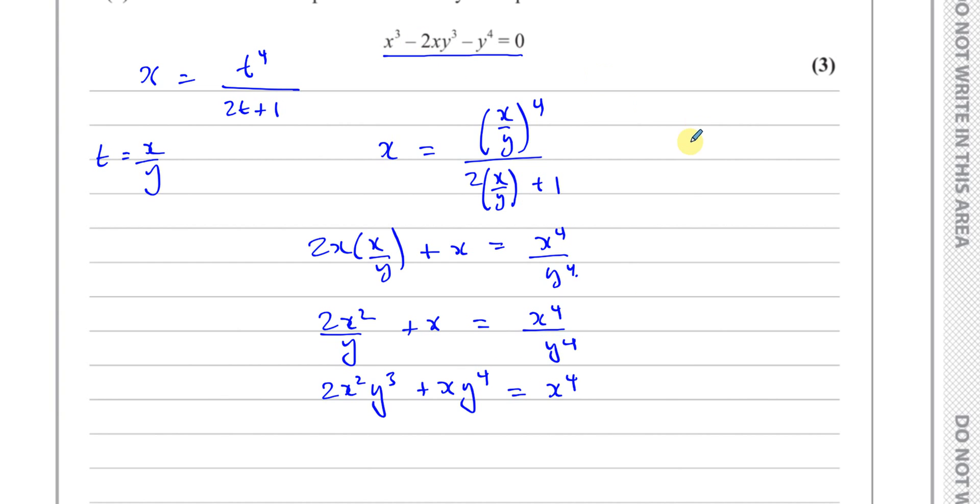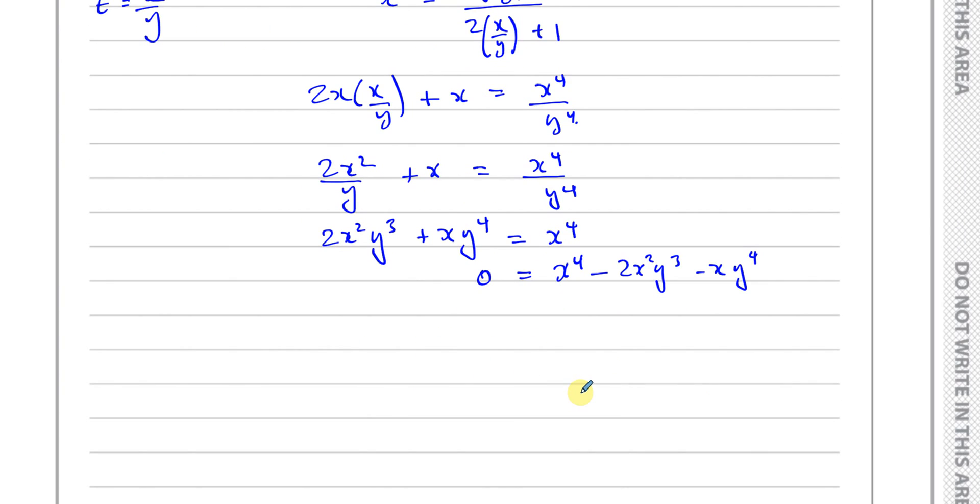We want it to look like this, so let's now bring everything on this side. You're going to have x to the power four minus 2x to the power of two y cubed minus x y to the power four. So I've subtracted these from both sides. Now what I can see is if I divide everything by x, it's going to look exactly what we've got. So I have x to the power three minus 2x y cubed minus y to the power four equals zero, just dividing everything by x.